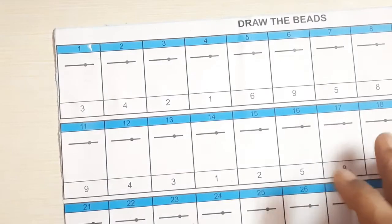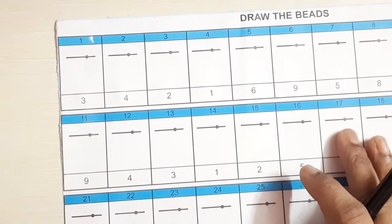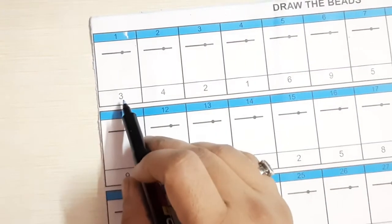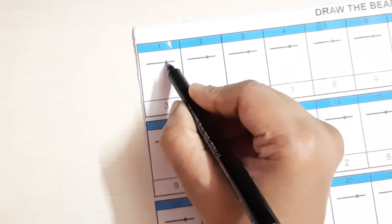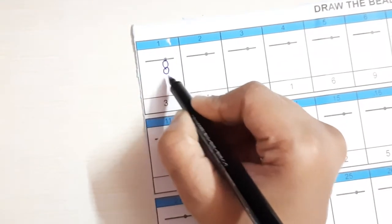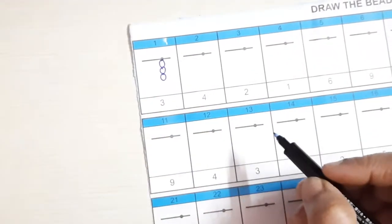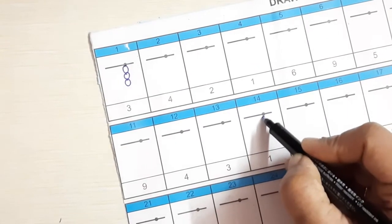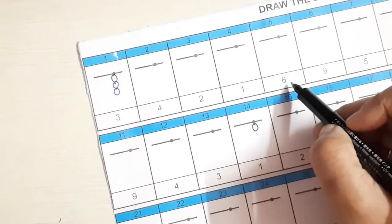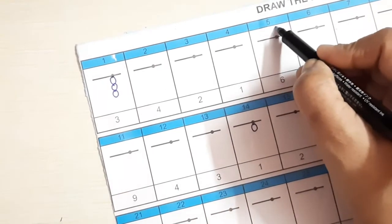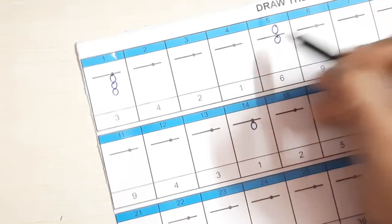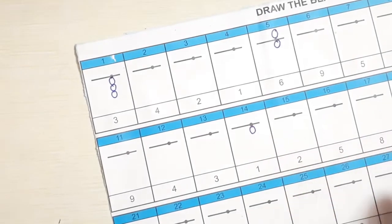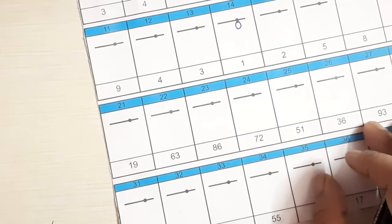Now I will show you the other examples also. Here, now here we have to draw the beads. Now see here 3. So on unit's place, 1, 2, 3. We will draw 3 beads over here. Then here 1, so draw only 1 bead. Now this one is 6, 5, 1, 6. Got it. Fine.